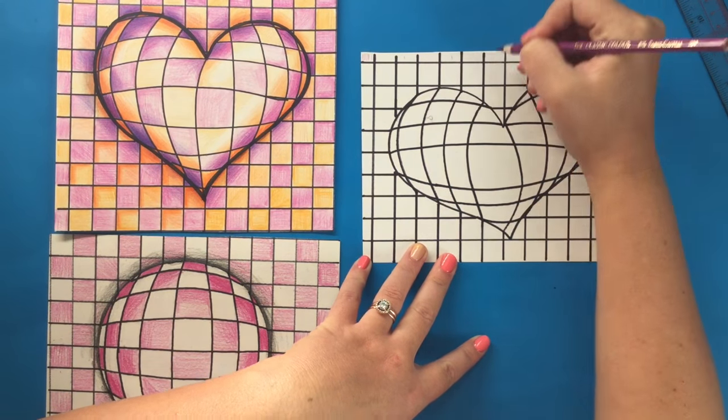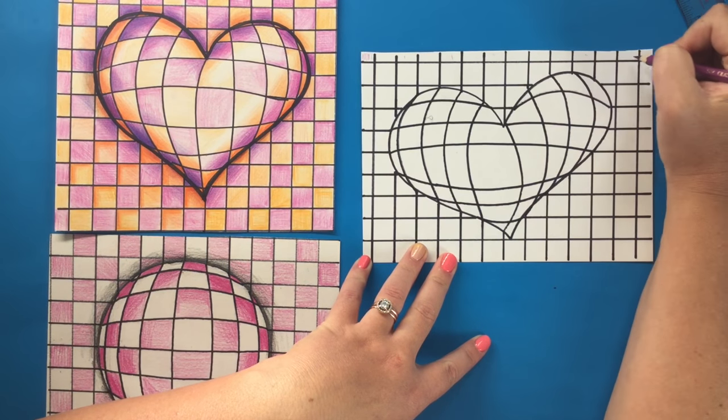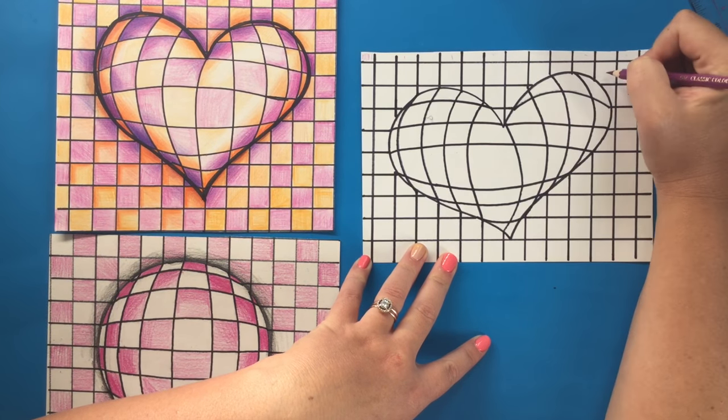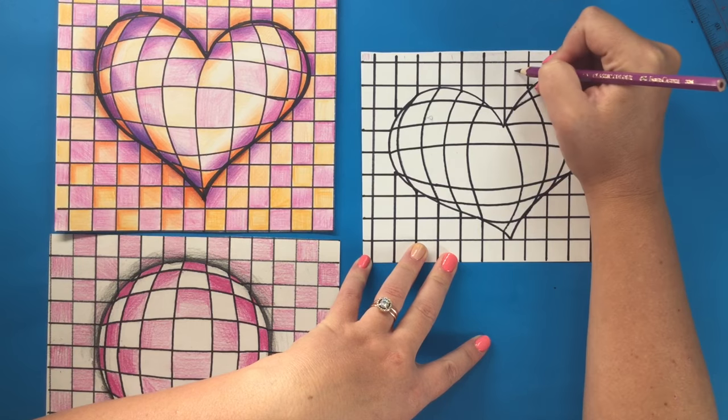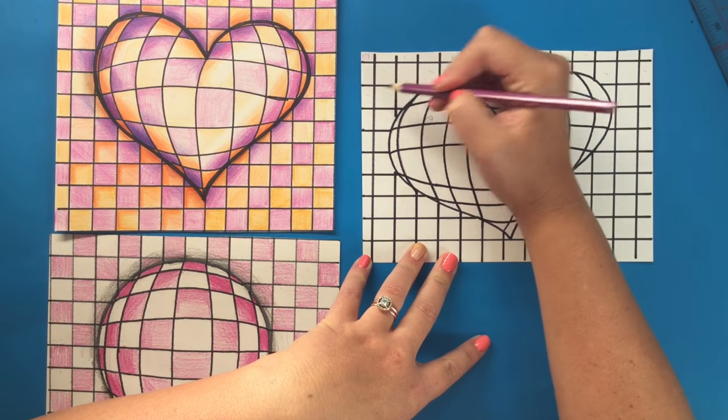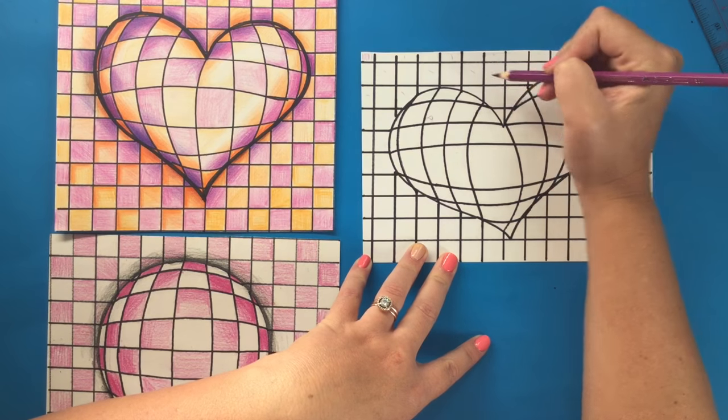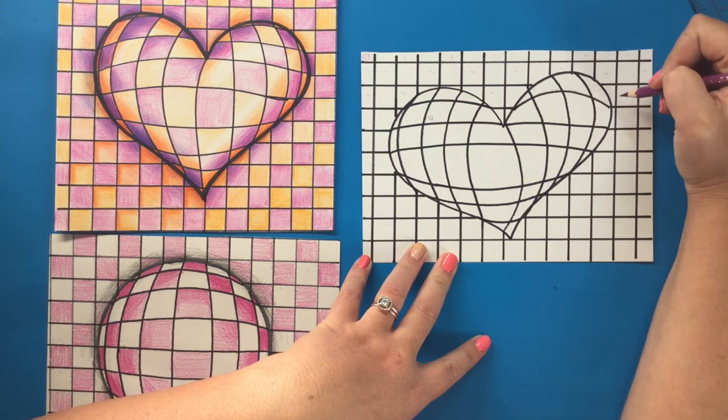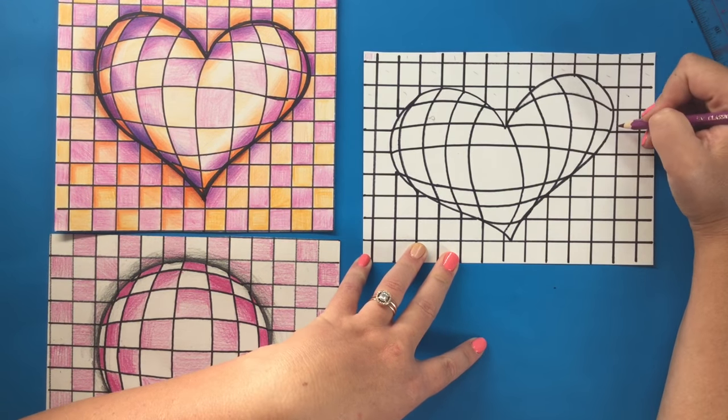And I sometimes just tick which squares I need to color in, making sure that I'm doing every other square. And I'm going to go ahead and do the whole entire flat grid before I do anything else.